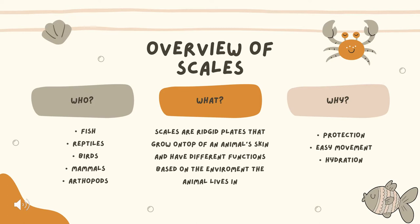So what is a scale? A scale is basically a rigid plate that grows on top of an animal's skin and has different functions based on the environment the animal lives in. Some of those functions include protection, easy movement, and hydration so the animals don't get dehydrated.